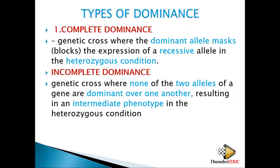For example, when you cross white and red, they form what is called an intermediate. The intermediate means neither of the two is dominant over the other — it produces a new color. It's not white, it's not red, it's in between. Similarly, crossing black and white doesn't produce white or black, but gray, which is in between the two.